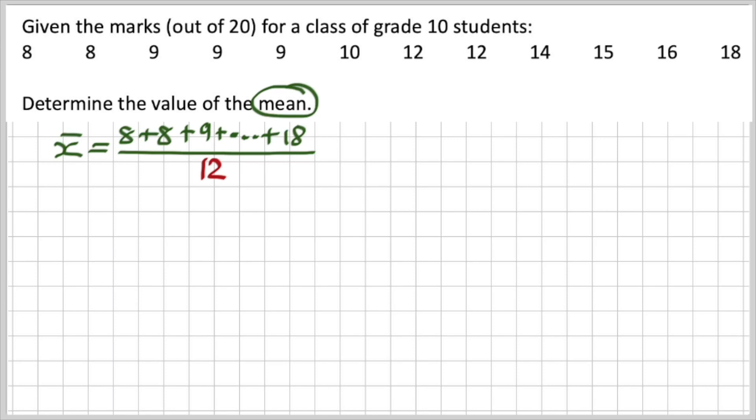Dividing it by how many numbers there are. So 8 plus 8 plus 9 plus blah blah blah up to 18 divided by 12. And this is giving me 12.42.